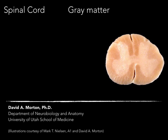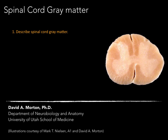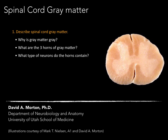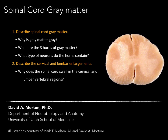I'm now going to talk about spinal cord gray matter. Our objectives are: one, describe spinal cord gray matter — why is gray matter gray, what are the three horns of gray matter, and what type of neurons do the horns contain? Second objective is to describe the cervical and lumbar enlargements by answering the question: why does the spinal cord swell in the cervical and lumbar vertebral regions?